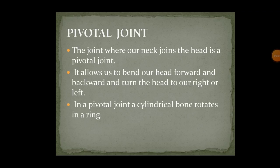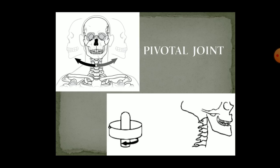Next is the pivotal joint. The joint present near our neck, which joins the neck and our head, is known as the pivotal joint. It allows us to move our head forward and backward and also from right to left, but it does not allow our head to rotate 360 degrees — that is the main difference between the ball and socket joint and the pivotal joint. In a pivotal joint, a cylindrical bone rotates in a ring. As shown in the picture, the skull is fixed on the backbone with the help of a pivotal joint.